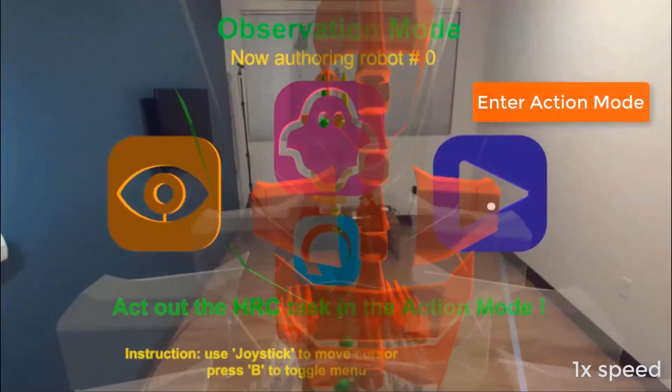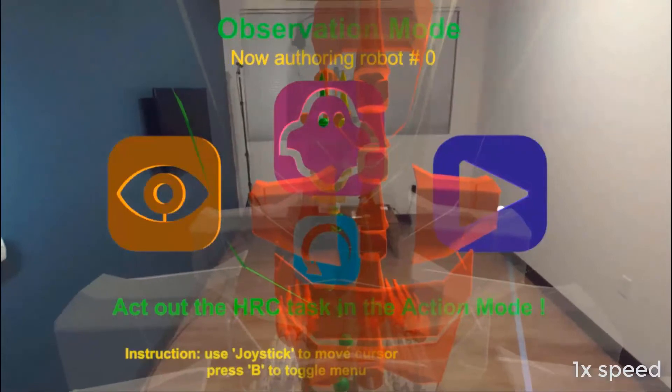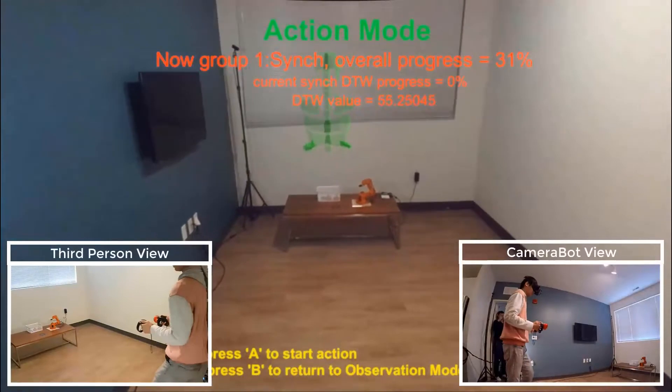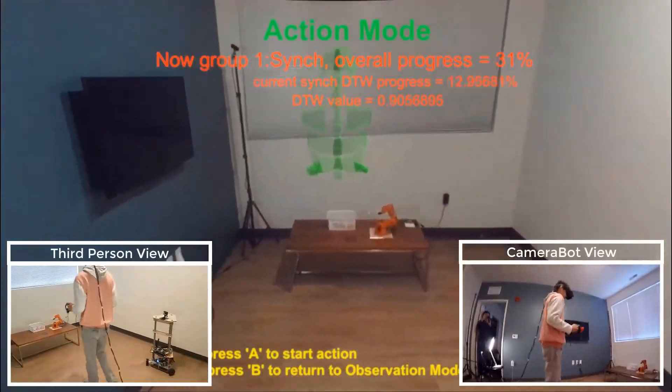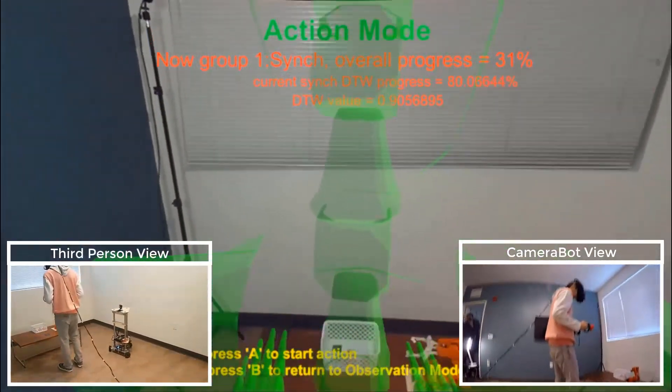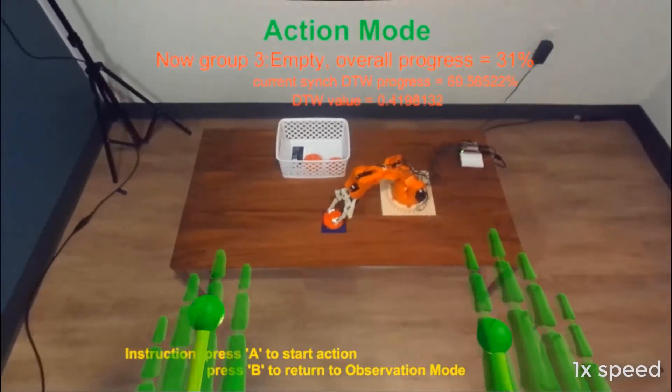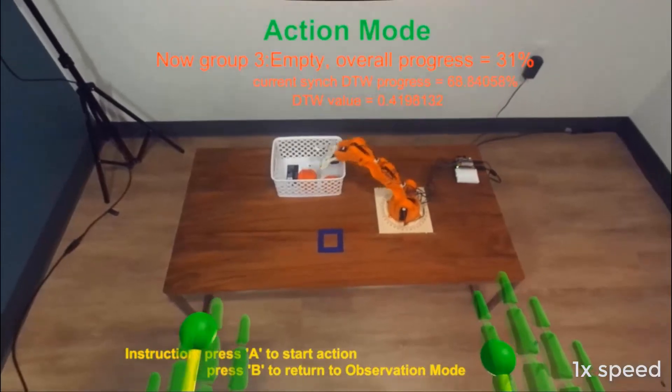When satisfied with the authoring, user can activate the action mode and play out the collaboration. During the action mode, user is guided by the ARGhost to repeat his previous action. Our system captures his real-time motion and outputs corresponding robot behaviors to complete the collaborative task.